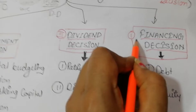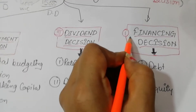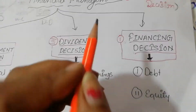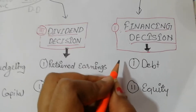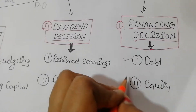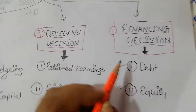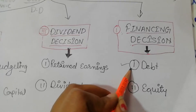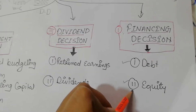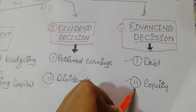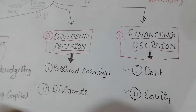There are two ways to collect finance for the business. One is debt and the other is equity. We will issue our debentures for debt, and we will issue equity shares. We are going to study this in a proper way.